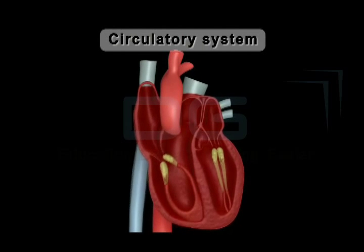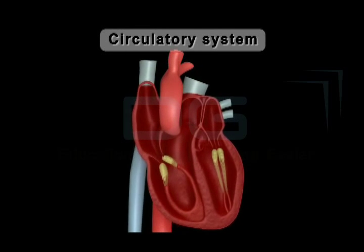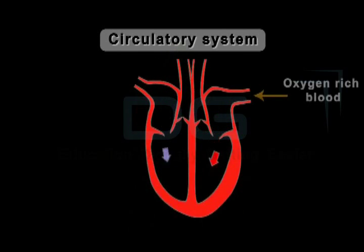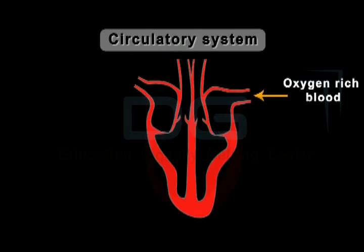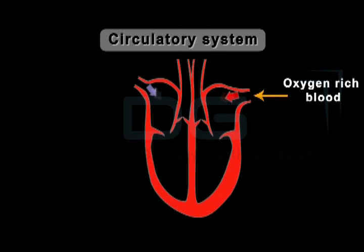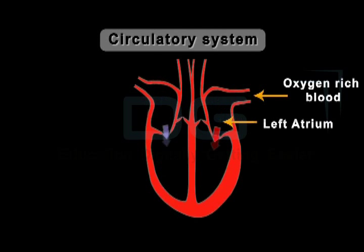Having known the structure of the heart, let's find out how it functions. Blood becomes oxygen-rich by absorbing oxygen in the lungs. The function of the heart starts when oxygenated blood is carried from the lungs to the left atrium of the heart by means of the pulmonary vein.